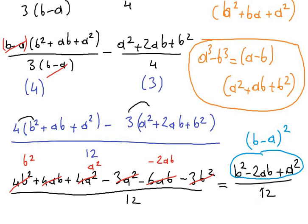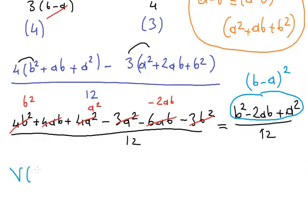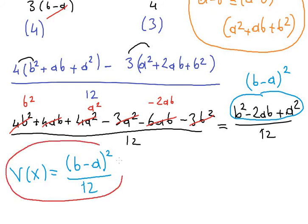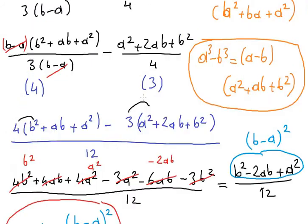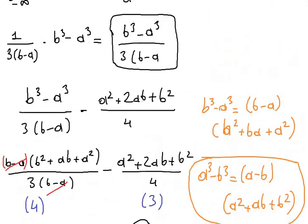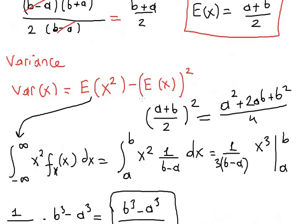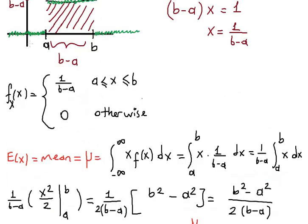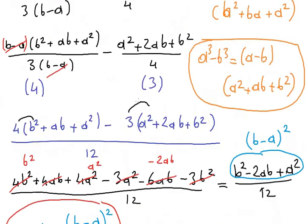So the variance of x is equal to b minus a, quantity squared, over twelve. We have now derived the expectation, the variance, and the probability density function of the uniform distribution. Next we will find the cumulative distribution function, or CDF.